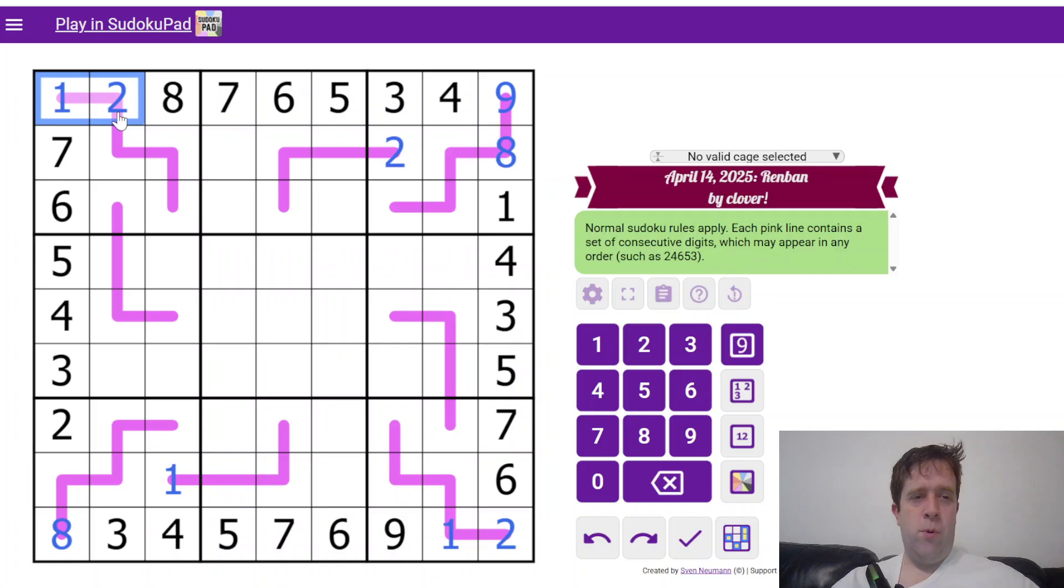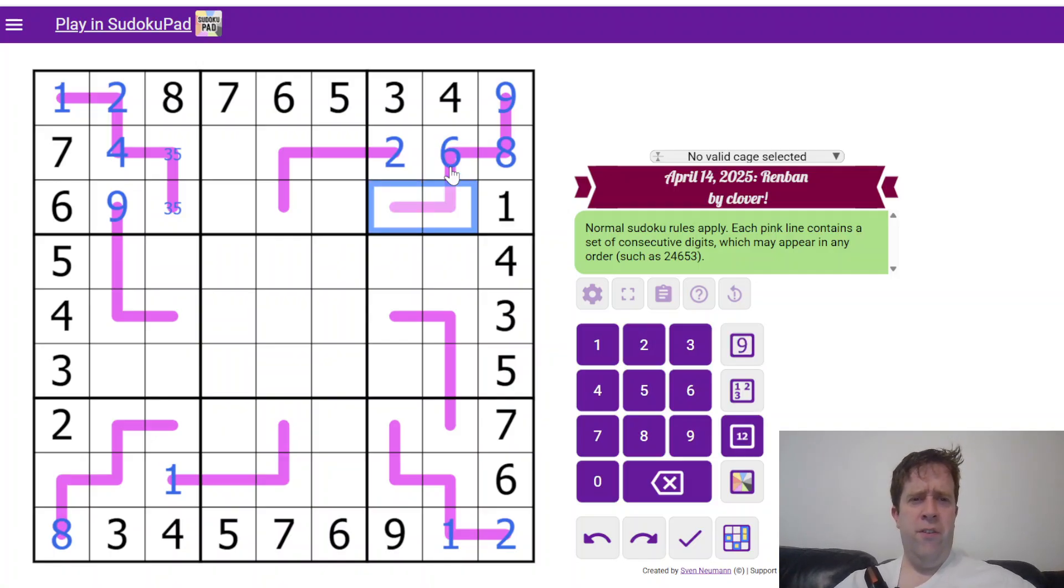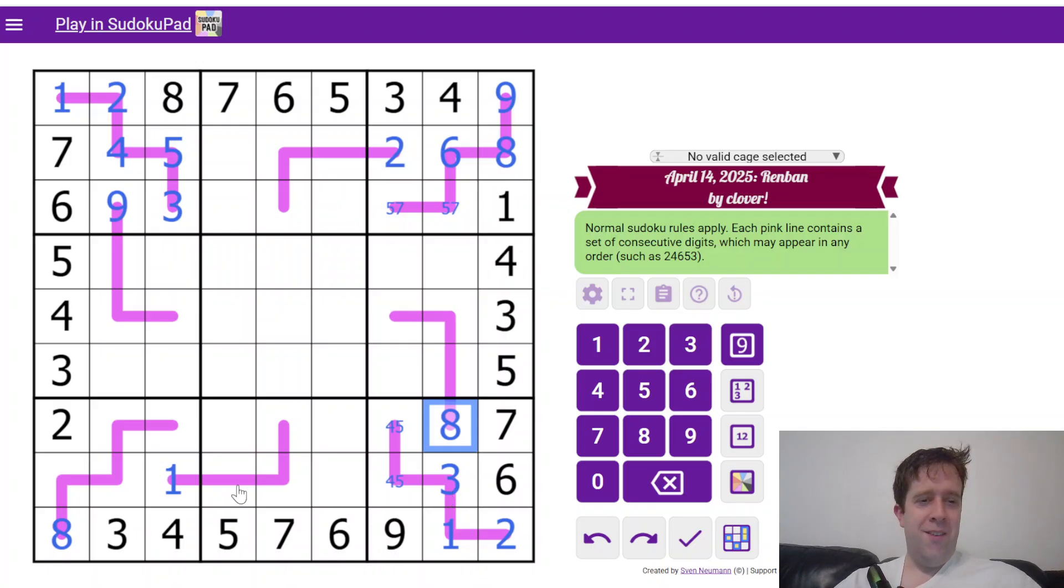This one up here has one, two, three, four, five on it. Four up here puts four there. This is a three-five pair, makes that a nine. Let's keep going around. Also, sound off in the comments if you think Renban lines are ugly at this thickness. I don't know who picked the color for these, but I don't like it. What's the point of a YouTube channel if you can't tell people your opinions without them asking?